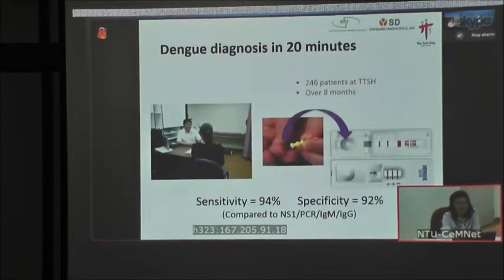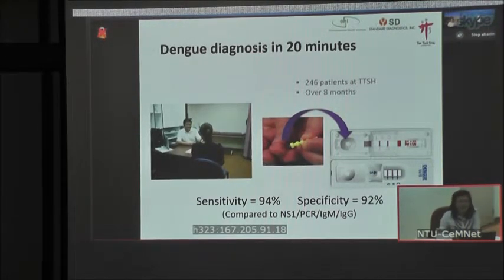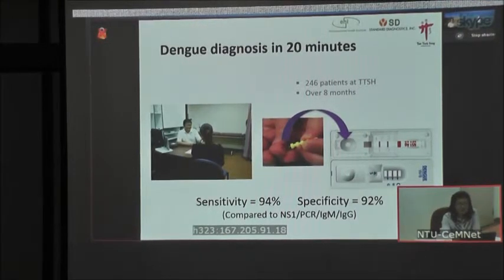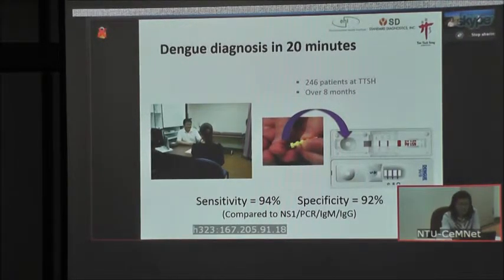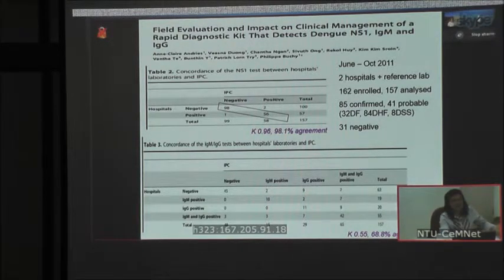This is what we did. We partnered with SD BioLine and conducted the study in a tertiary clinic setting, recruiting undifferentiated febrile patients. We ran the fingerprick NS1 test and compared it with conventional tests done in a reference laboratory for dengue diagnosis. Using combinations of NS1, IgM, and IgG, we were able to achieve a sensitivity of more than 90% using this kit, giving us confidence that in the doctor's office we can introduce early diagnosis.